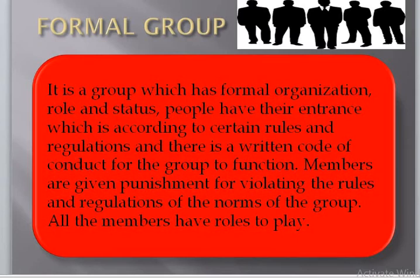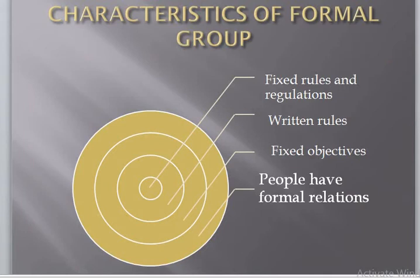A formal group is a group which has formal organization, role, and status. People have their entrance according to certain rules and regulations, and there is a written code of conduct for the group to function. Members are given punishment for violating the rules and regulations, and all members have a role to play. Characteristics of a formal group include fixed rules and regulations, written rules, fixed objectives, and formal relations among people.